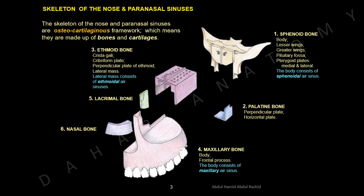Skeleton of the nose and paranasal sinuses. The skeleton of the nose and paranasal sinuses is an osteocartilaginous framework — meaning they are made up of bones and cartilages. In this diagram, we are showing only the bones.